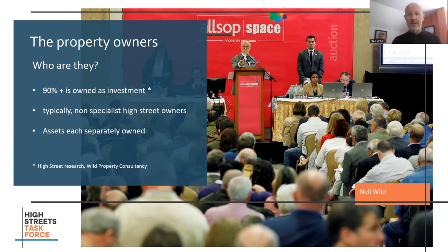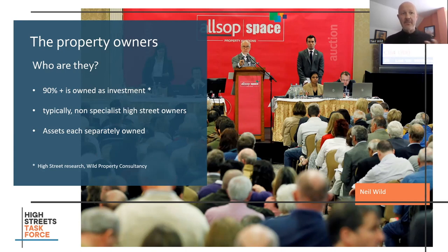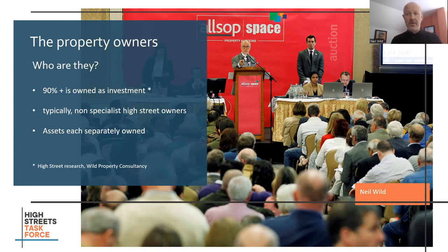There are exceptions, and I will refer to those. But the days of large pension funds owning our high streets is long gone. Most properties are owned by individual people or individuals making up a company. And these assets are separately owned. In the research I've done on my local high street, where there are 95 properties, around 90 of those are owned by different people, different individuals, different companies. They're not owned in clusters — there's not one landlord with all of those properties. There are actually 90 different owners out of 95 on my local high street.